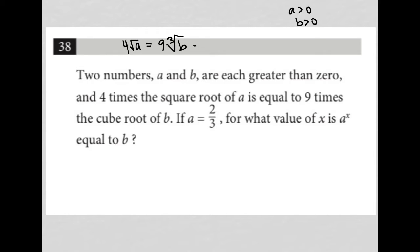If A equals two-thirds, that means I'd have four square root two-thirds equals nine cube root B. For what value of X is A to the X equal to B? So, here's my question. A to the X equals B. What's X equal?